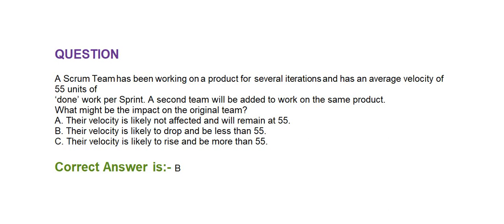A Scrum team has been working on a product for several iterations and has an average velocity of 55 units of done work per sprint. A second team will be added to work on the same product. What might be the impact on the original team? Option A: their velocity is likely not affected and will remain at 55. Option B: their velocity is likely to drop and be less than 55. Option C: their velocity is likely to rise and be more than 55. Correct answer is Option B — their velocity is likely to drop and be less than 55.